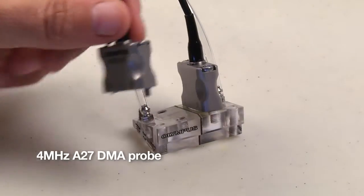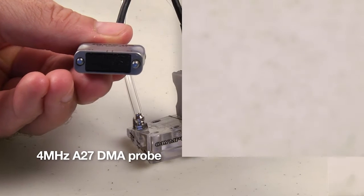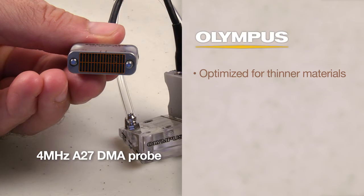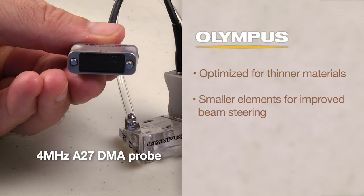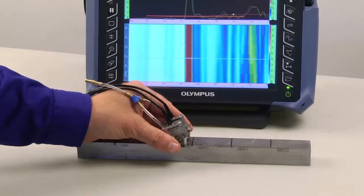The 4 MHz A27 DMA probe uses a 2 by 16 element configuration in each housing and is optimized for thinner materials using smaller elements for improved beam steering and surface inspections.